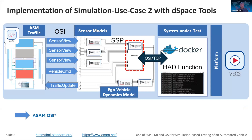Now we come to Simulation Use Case 2. The target is that you have a complete ego vehicle and want to assess its overall performance, and the structure is quite similar. Here we have two additional sensors coupled to the simulation tool — in this example the DSpace ASM tool. All the sensors are FMUs corresponding to the FMI standard. These are linked via the SSP definition to the HUD function, and below you see the ego vehicle dynamics model. This is the system under test that has to be tested.